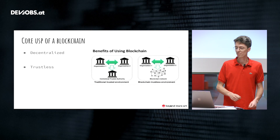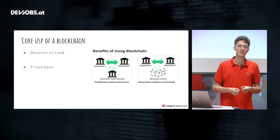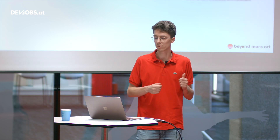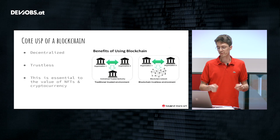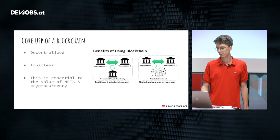Well, the core value of a blockchain is that it is decentralized. The history is immutable — nobody can change it after the fact. By doing that it becomes trustless: you do not have to trust a central authority like a bank or government to do your accounting correctly. This is also where a lot of the value of NFTs and cryptocurrencies essentially comes from.